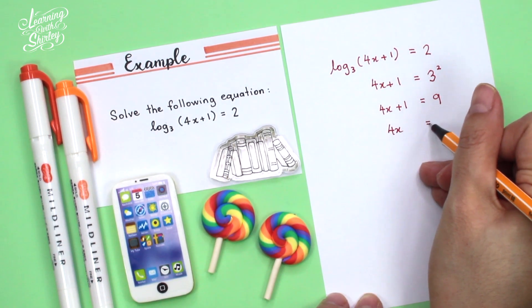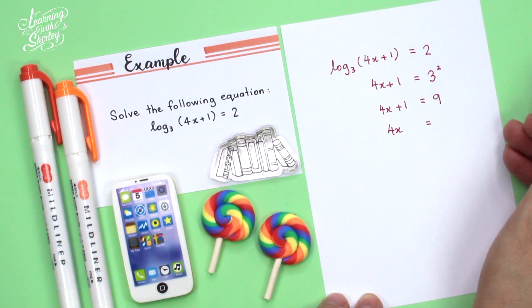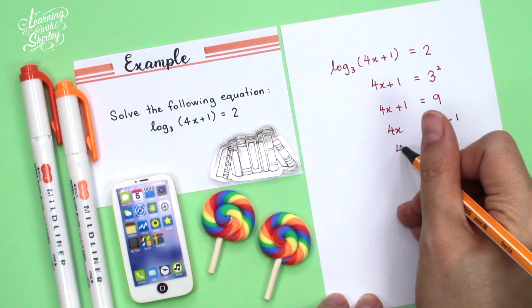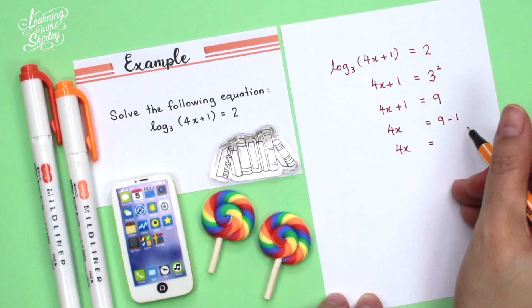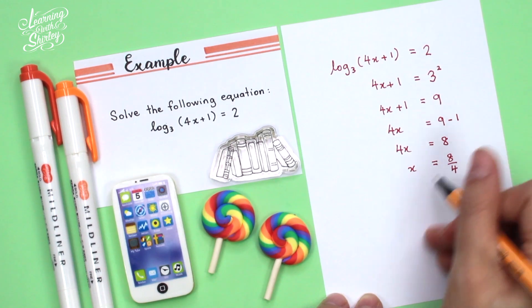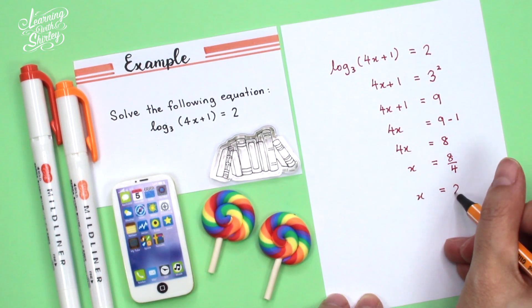So 4x is equal to, shift over the 1 over to the right-hand side, becomes minus 1. So 9 minus 1, so 4x is equal to 9 minus 1 is 8, and x is equal to 8 divided by 4, and the answer is equal to 2.